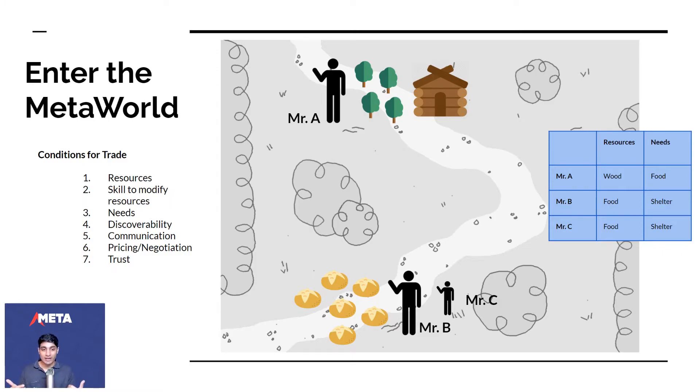So he decides to go and work for Mr. B. And this is exactly how jobs work. Somebody is doing trade and instead of you directly doing trade, you are indirectly doing trade by working for somebody else who is directly doing trade. And this is the origin of jobs in a management theory.